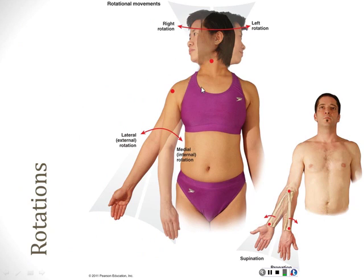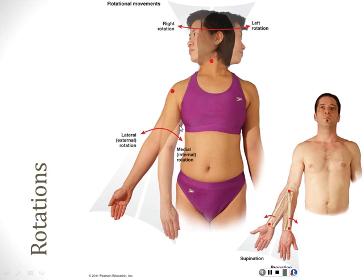Then there's the rotations. Obviously the head rotates, but so do the humerus and femur. You can rotate the humerus and do the same thing with your leg — that's rotation of the femur. And then pronation and supination: supination is hands up, holding soup; pronation is hands down. That's also a rotation — the radius is rotating. That's supination and pronation.